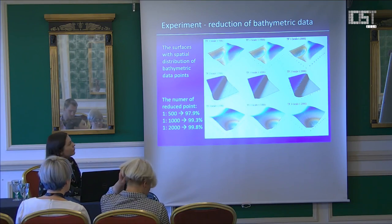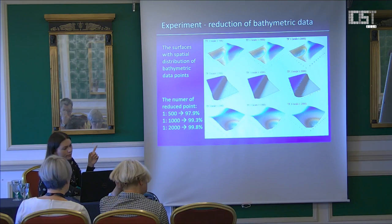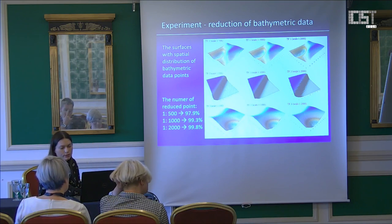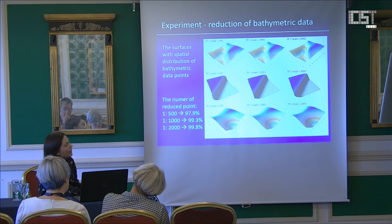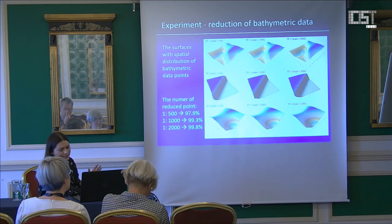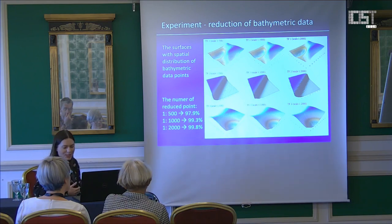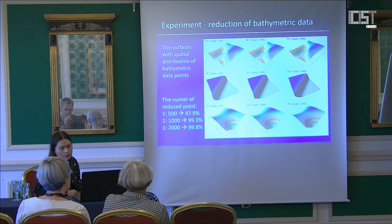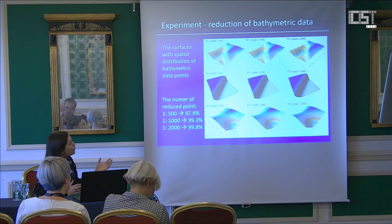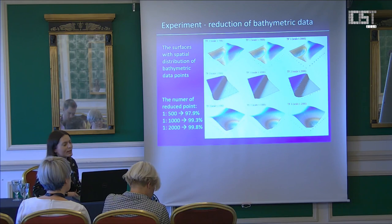Surfaces obtained for scale one to 500 almost perfectly illustrate the shape of the tested area. For other scales, you can see some roughness associated with the number of points in the sets, however they do not differ much from the reference surface. Most importantly, during the usage of the created method, more than 97% of points were reduced.